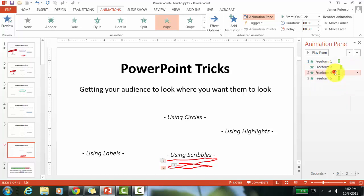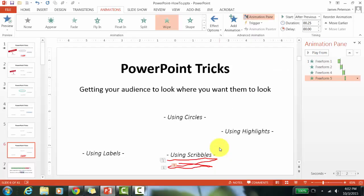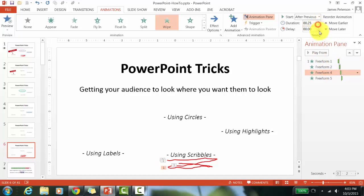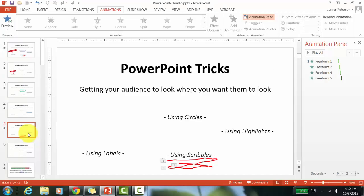I want it all to happen in one click, so I'll set each animation to Start After Previous. I can also adjust the timing — the last line is very short so I might set it to 0.25 seconds. Looking at the result, all the lines seem too slow, so I'll change them to 0.25 seconds each, and the last one to 0.1 seconds. Now that looks much better.